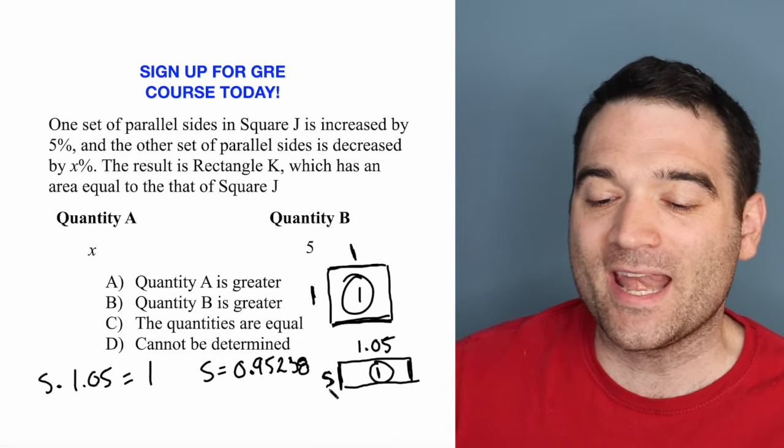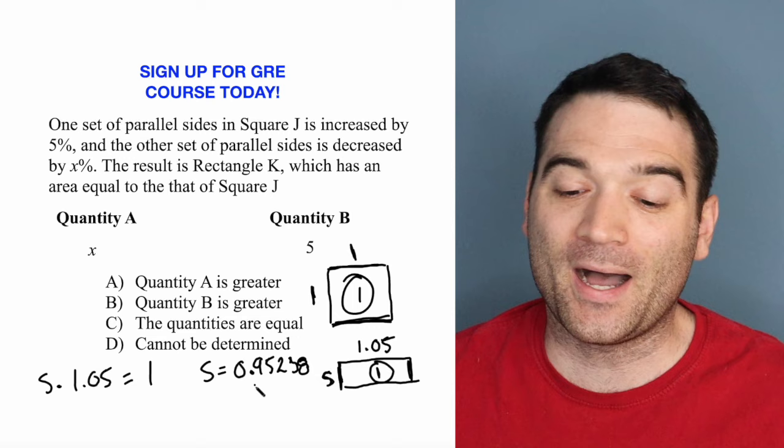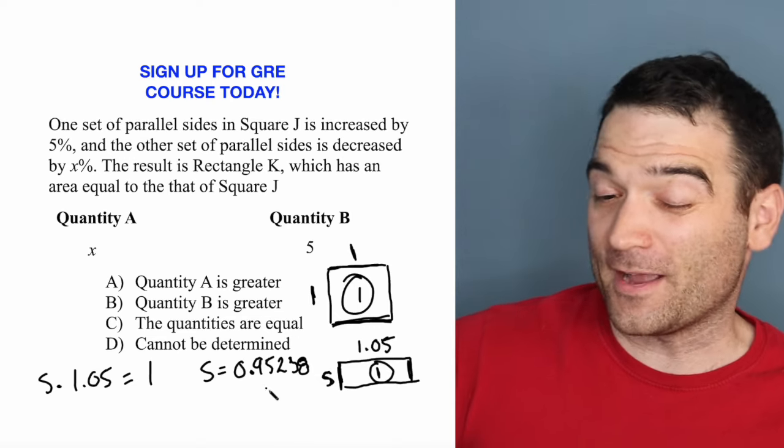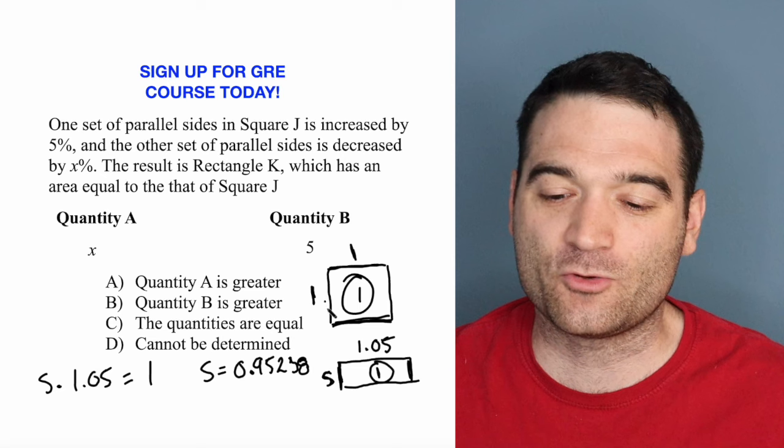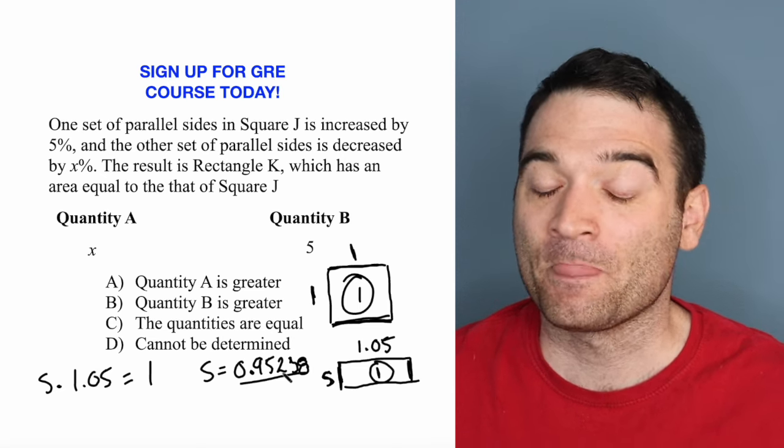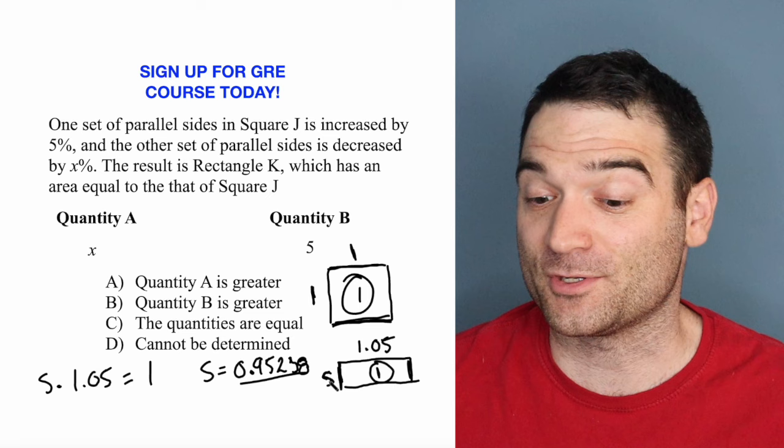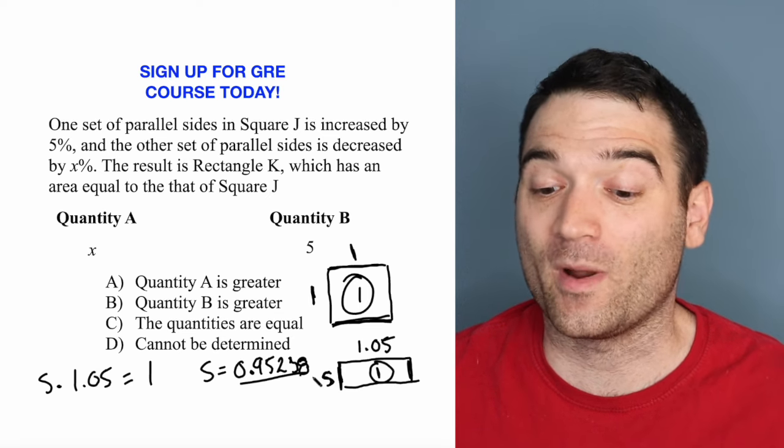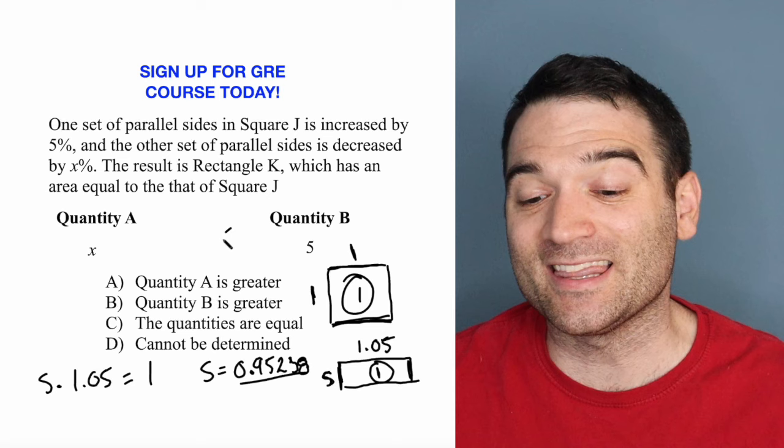If this side is 0.95, it means that this was decreased by, I should say, 4.8%. It was decreased by just enough to get me to this number, but it wasn't decreased by 5%. Because had it been decreased by 5%, this would be 0.95. Meaning that this value X is less than 5.